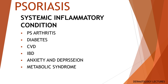Psoriasis is a common long-term systemic inflammatory condition which can affect every aspect of people's life and is associated with multiple co-existent conditions including psoriatic arthritis, diabetes, cardiovascular diseases, inflammatory bowel disease, anxiety and depression, and metabolic syndrome. Instituting early effective treatment for psoriasis is key to preventing unnecessary suffering, enabling people to live full and fulfilling lives and may also reduce comorbidity.